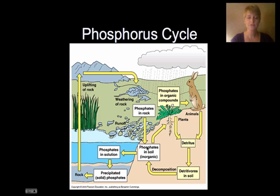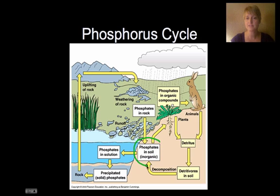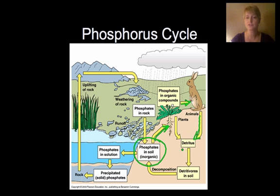The phosphorus cycle — phosphorus is another mineral that plants and animals need. Phosphorus is mostly contained in rock, so we have a lot of phosphates in rock, but as the rock weathers it breaks down. We then have phosphates in the soil that can be used by plants, and then animals eat the plants.